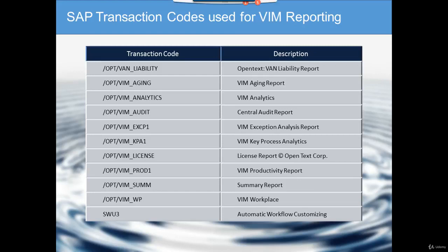The first one is the OpenText VN Liability Report. It takes into account all the liabilities that you are liable to pay, so anything related with accruals that you need to pay.